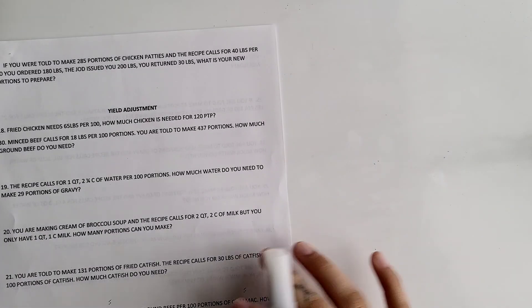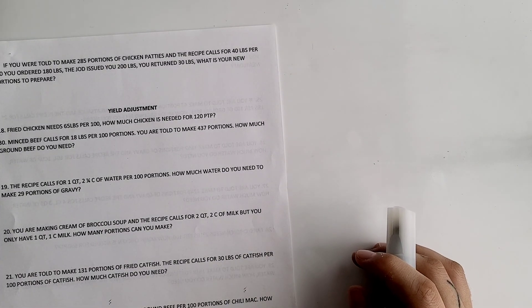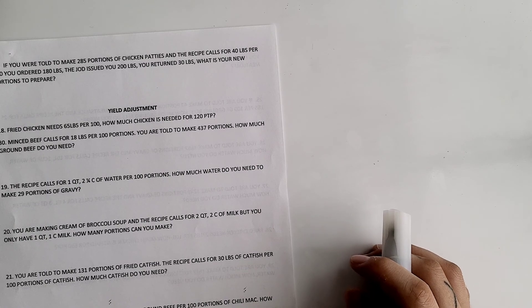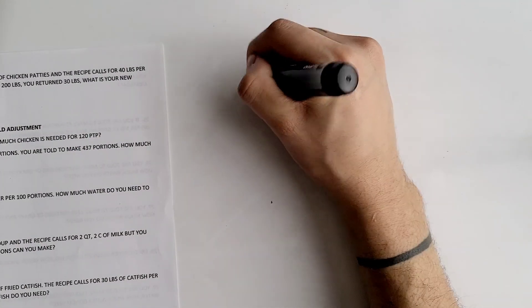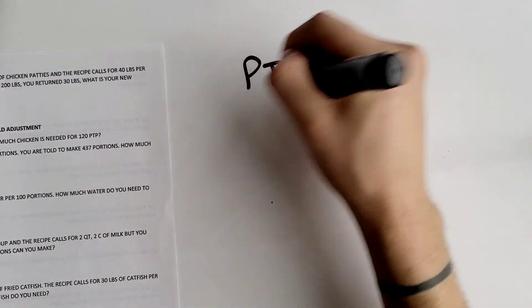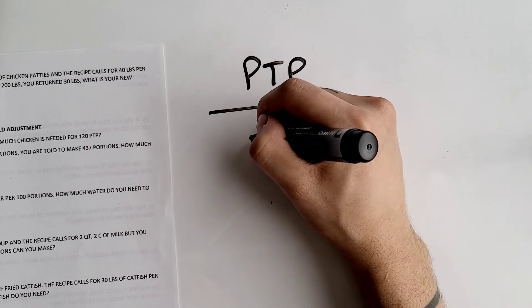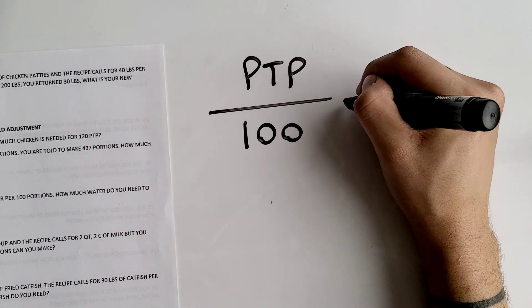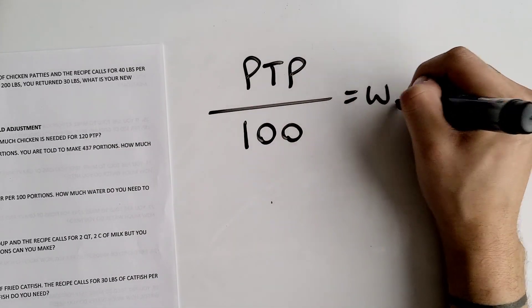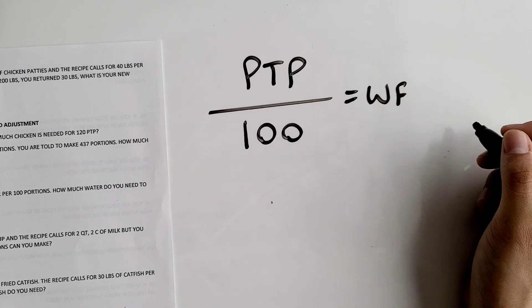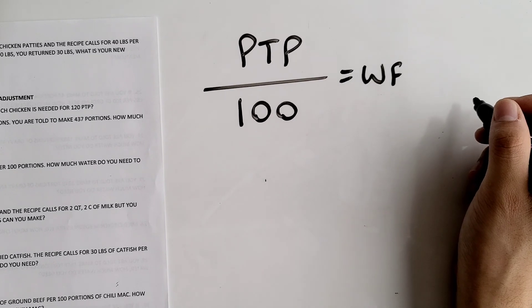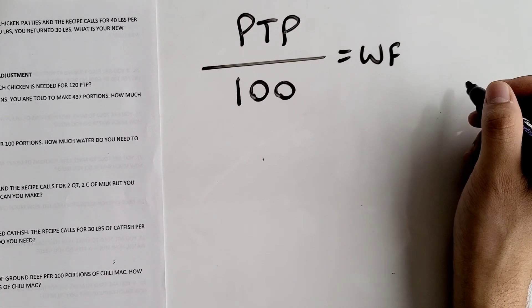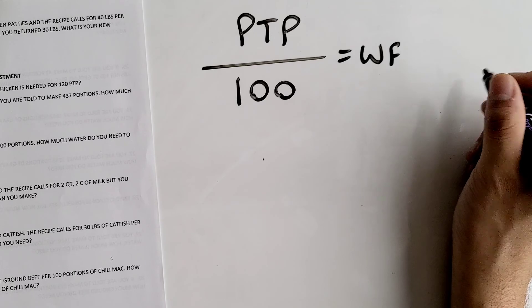Hey everyone, so today we're going over some more yield adjustment recipe conversions. We're going to write this formula down: portions to prepare (PTP) divided by 100 gives you your working factor. When it comes to yield adjustment recipes, you always want to find your working factor first when you come to these word problems.